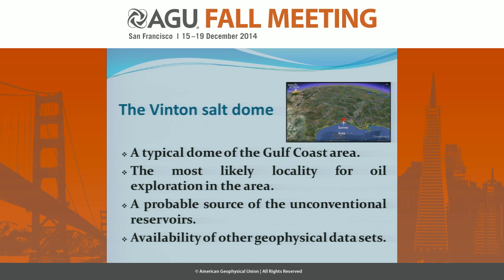The Winton salt dome, located southwest of Winton, is considered important because it's a typical dome of the Gulf Coast area. If we can apply the filter successfully on that, there is hope that we can extend the application of the filter to other areas as well. It's the most likely locality for oil exploration in the area and a probable source of unconventional reservoirs based on USGS reports. There is about 9 billion cubic feet of gas in the area, but conventional methods like seismic are not very successful in exploring those resources, so we need other methods like full-tensor gravity to explore those reservoirs.